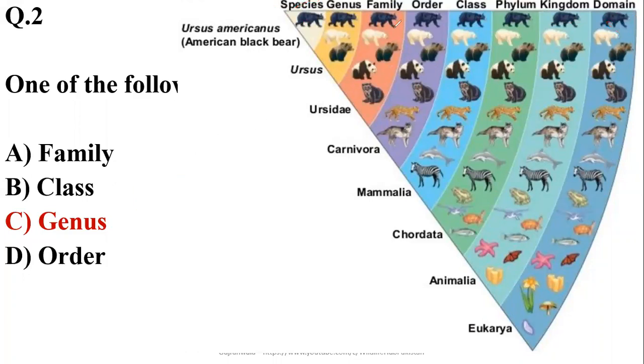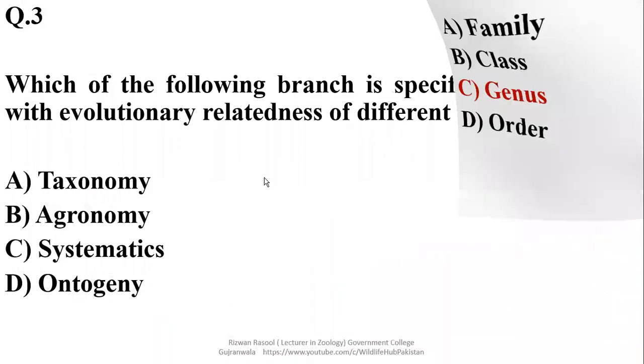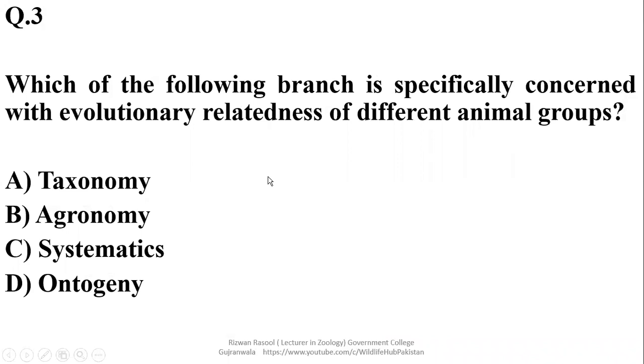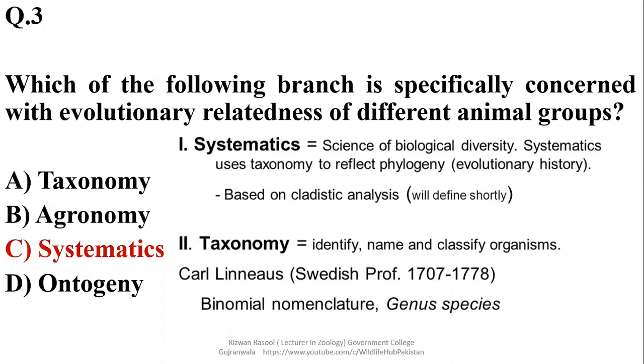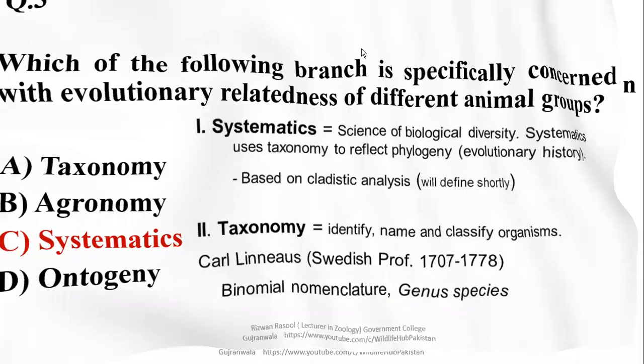Question number 3: Which of the following branch is specifically concerned with evolutionary relatedness of different animal groups? It is systematics which is better related to the evolutionary relationship, while taxonomy is concerned with identification, naming and classification of organisms. But systematics also tries to build phylogenetic or evolutionary relationship between organisms, so right option is Charlie.